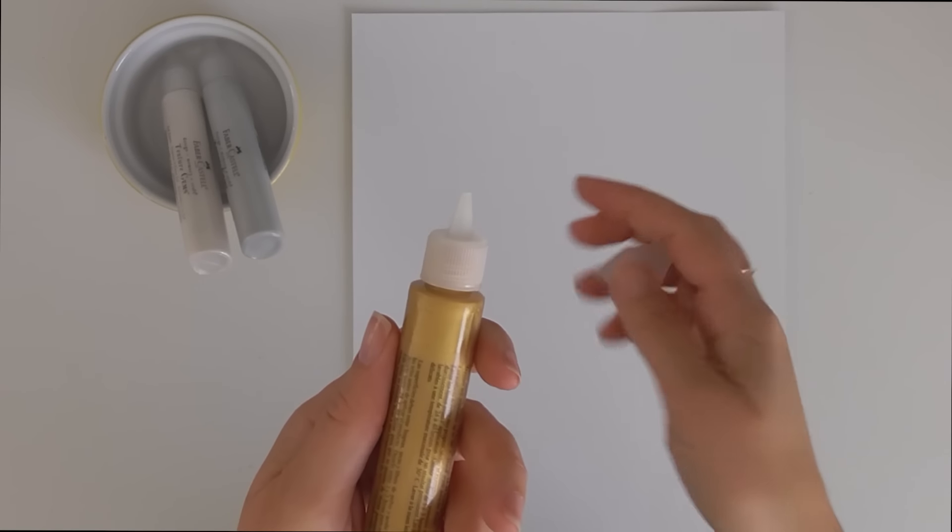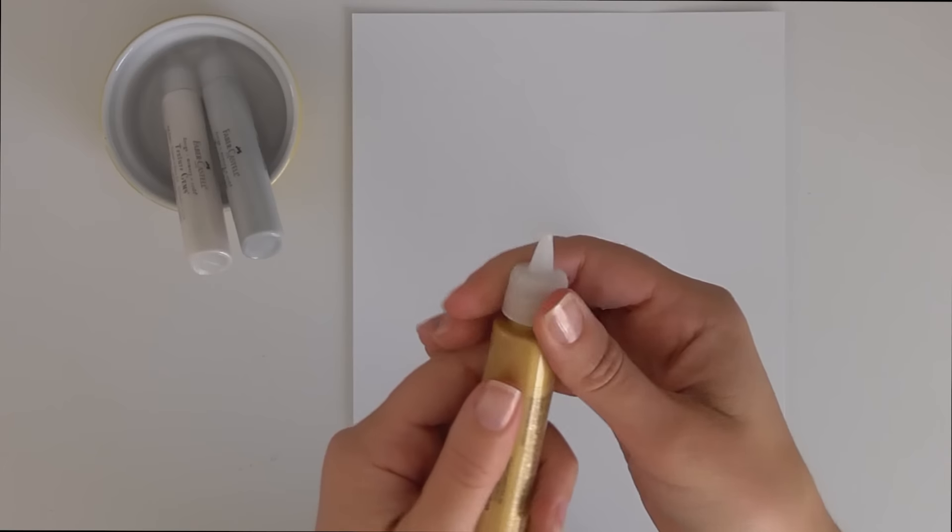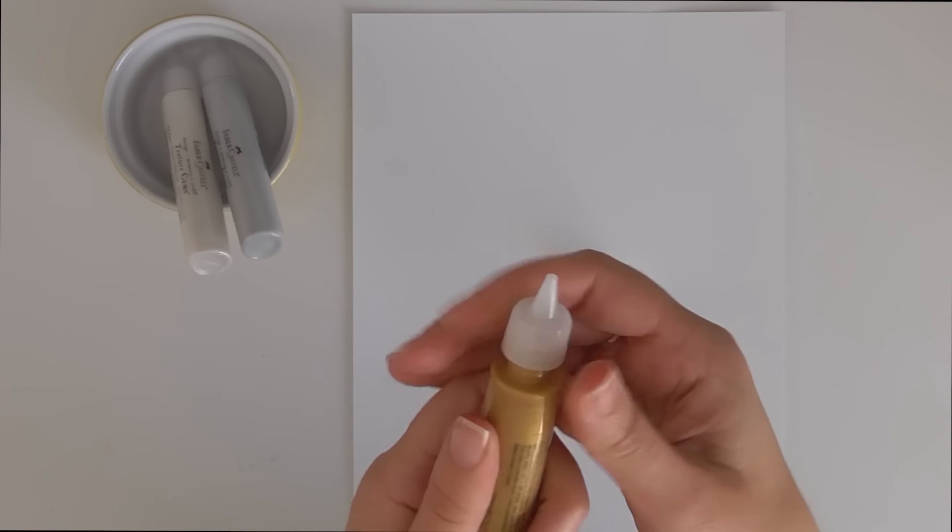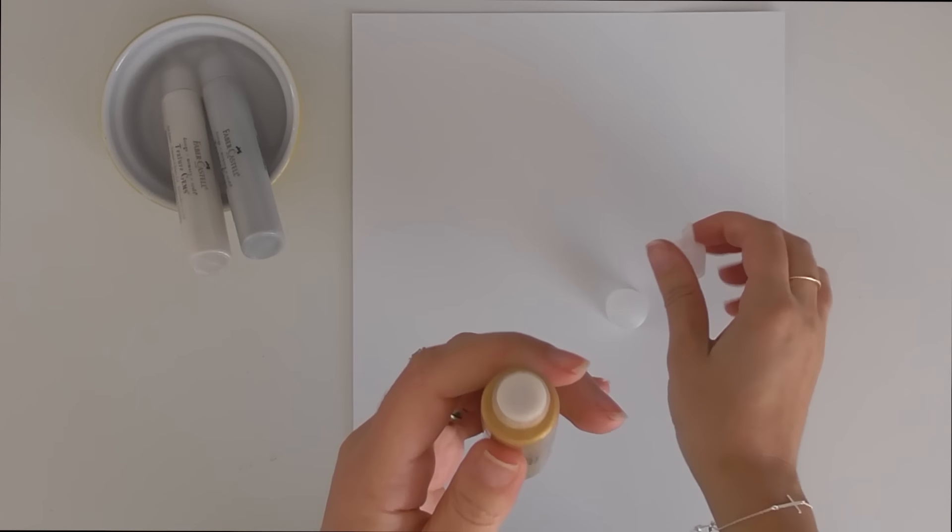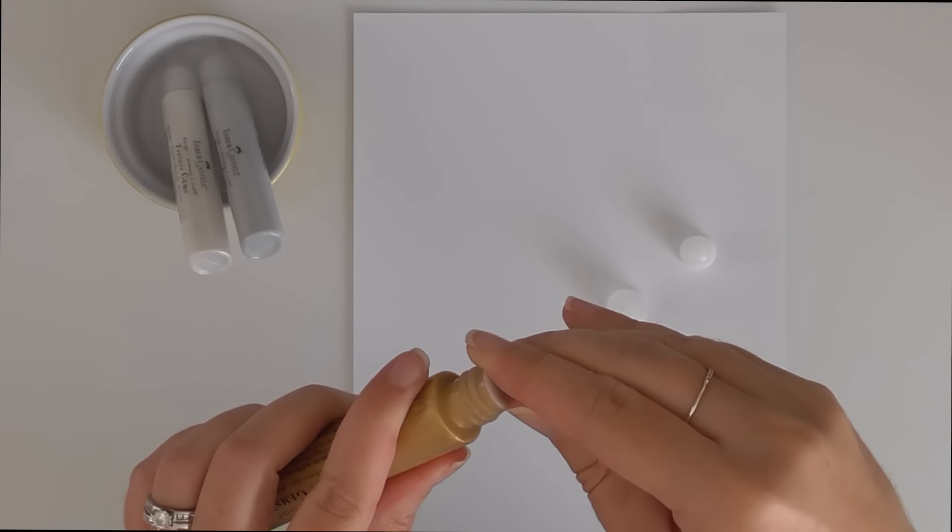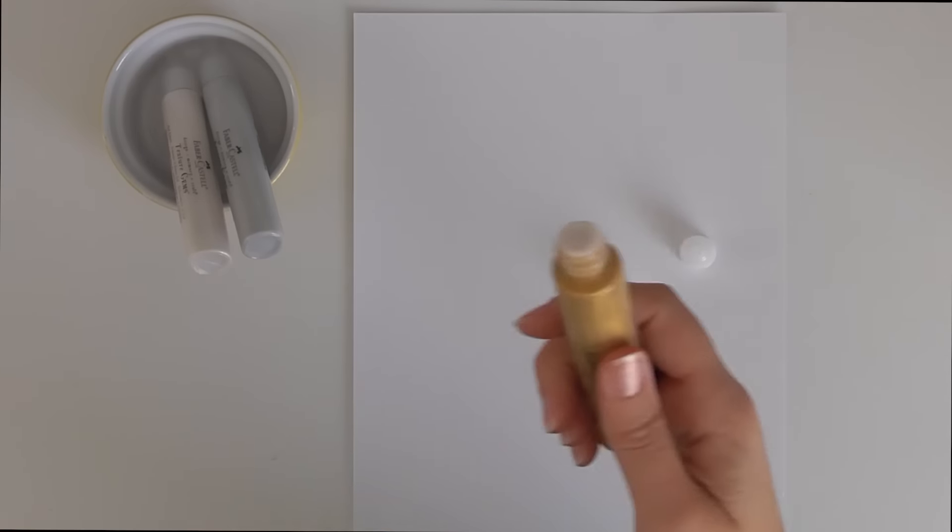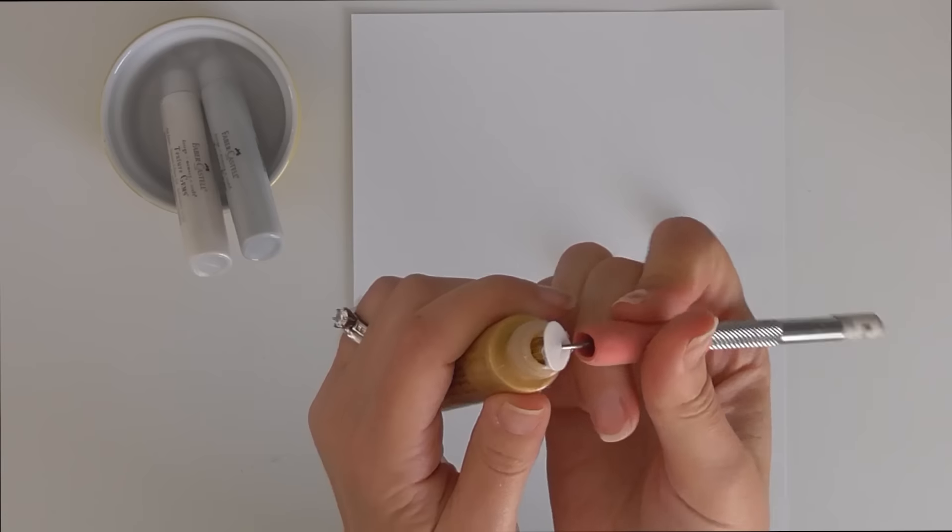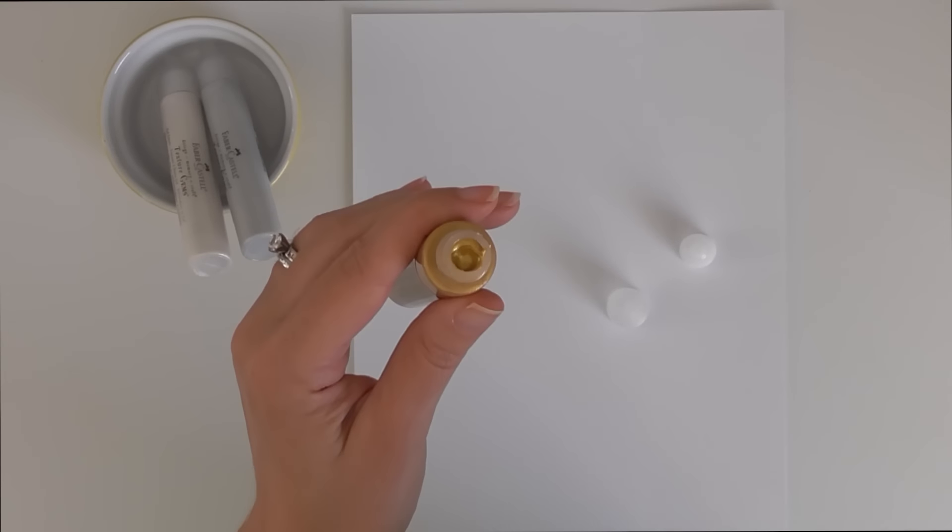When using your texture gems for the first time, you'll need to take off the outer cap and then twist off the precision nib and then remove that little protective paper that's on there. That just kept it safe while it was getting into your hot little hands. And then you can just screw the nib back on.